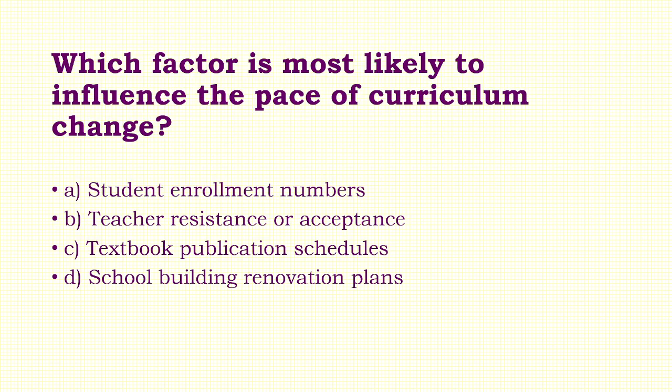Question 17: Which factor is most likely to influence the pace of curriculum change? Options: A) Student Enrollment Numbers, B) Teacher Resistance or Acceptance, C) Textbook Publication Schedules, D) School Building Renovation Plans. Answer: Option B — Teacher Resistance or Acceptance.